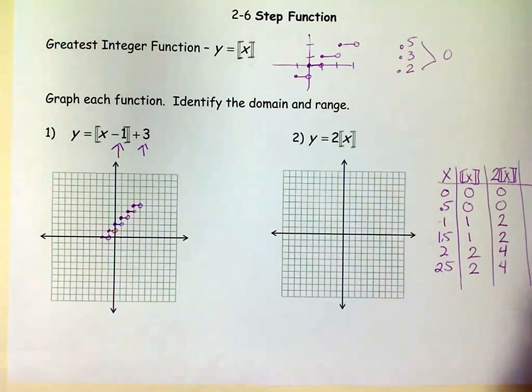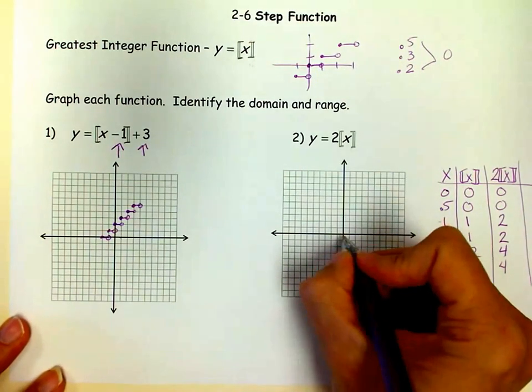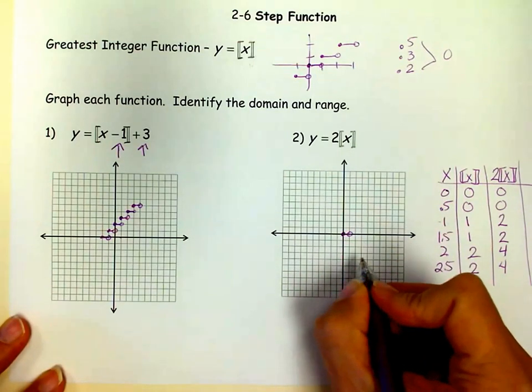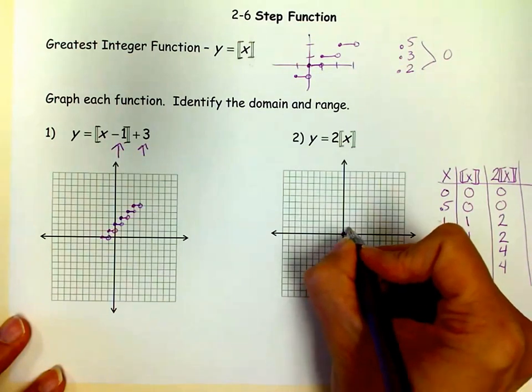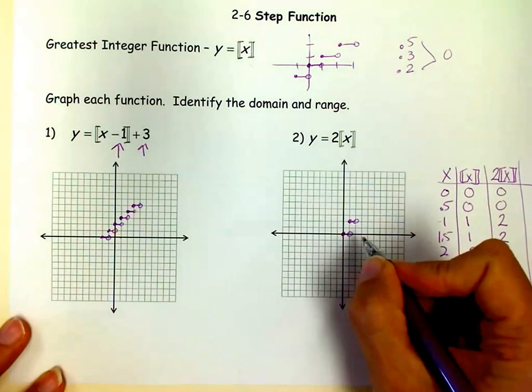So let's graph those little points. So at 0, 0, I'm still at 0. Close circle on the left, open circle on the right, like this. But notice, once I get to 1, I don't go up to 1, I go up to 2.